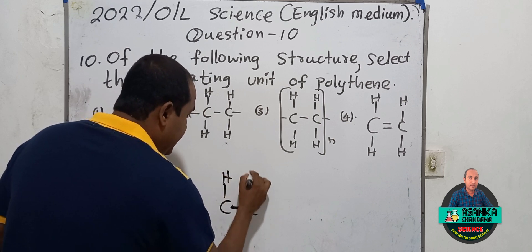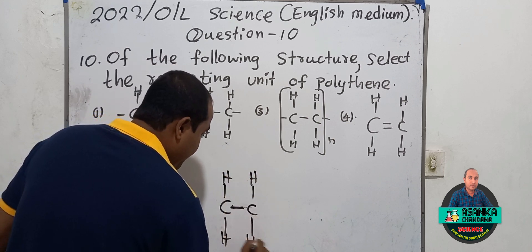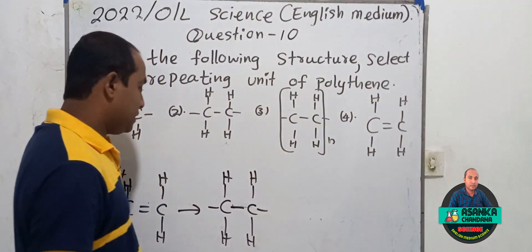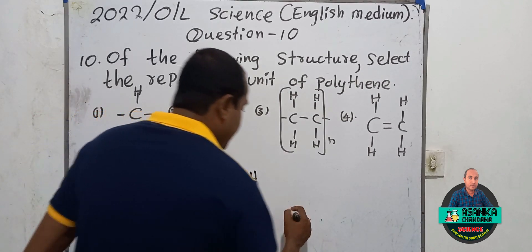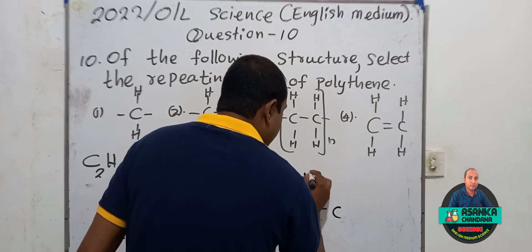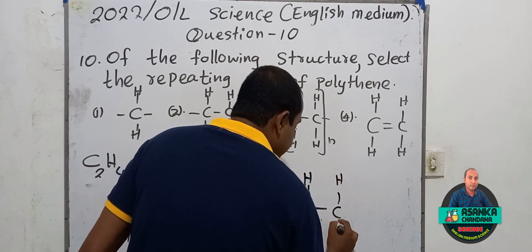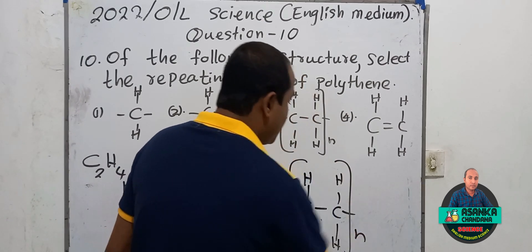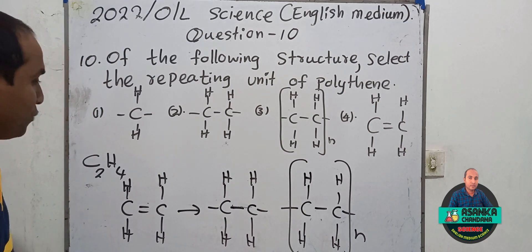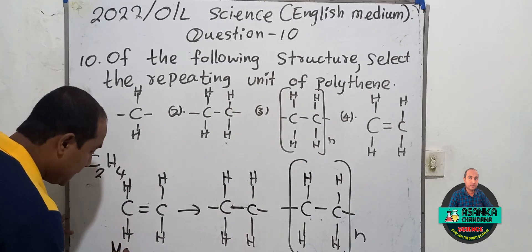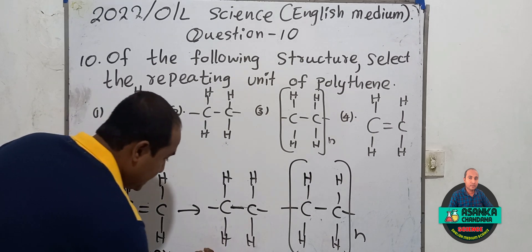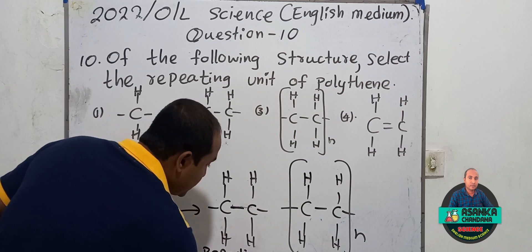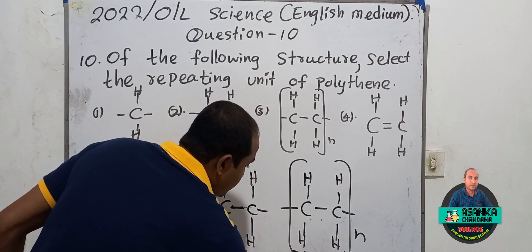The repeating unit of polythene is like this structure shown. The repeating unit means the molecule that combines again and again to form the polymer. Polythene, as a polymer, contains a large number of these molecules. So we have: the monomer, the repeating unit, and the polymer.